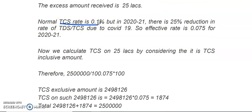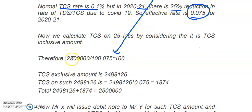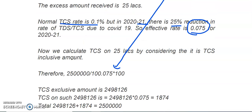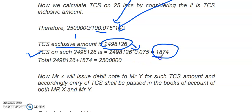We will consider the TCS rate as 0.1%, but for this year 2020-21 there is a 25% reduction, so the effective rate is 0.075%. We will consider this 25 lakhs as inclusive of a TCS amount. So: 25 lakhs divided by (100 + 0.075%) multiplied by 100. The TCS-exclusive amount is 24,98,126. Calculating in reverse — TCS on this basic amount at 0.075% — the TCS is Rs. 1,874. Adding basic plus TCS, you again get 25 lakhs.